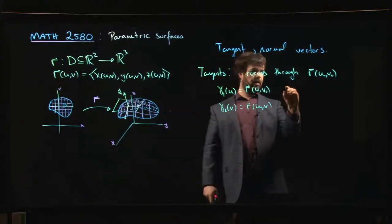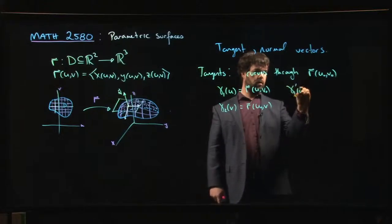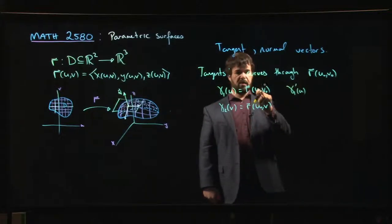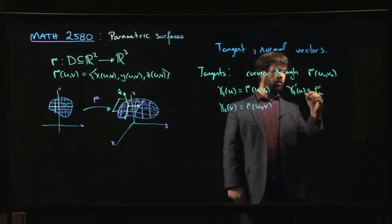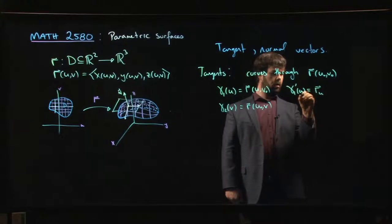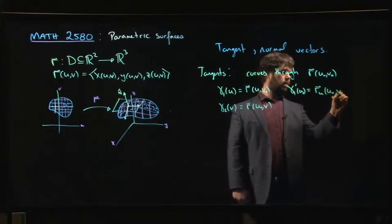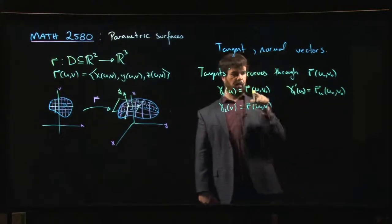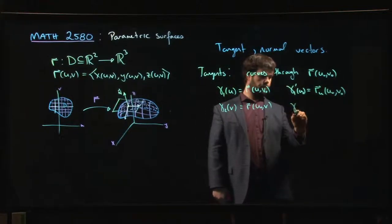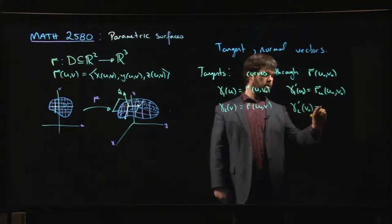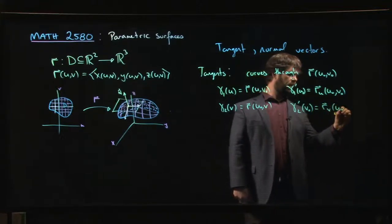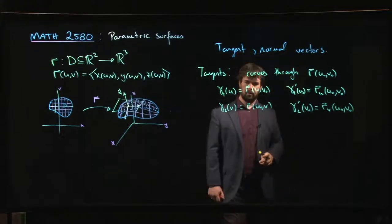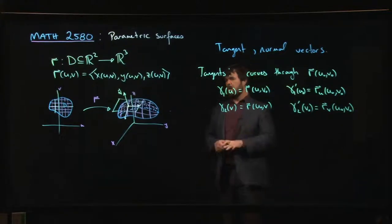The tangent vector Gamma 1 prime — hold V constant, take the derivative with respect to U — is simply the partial derivative of R with respect to U, evaluated at the point U-naught, V-naught. The other tangent vector is the partial derivative with respect to V at U-naught, V-naught. This is a story we've seen before.